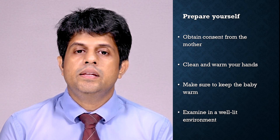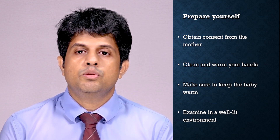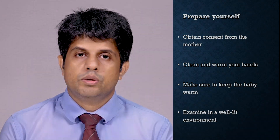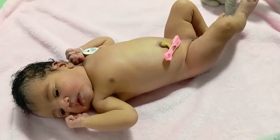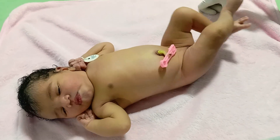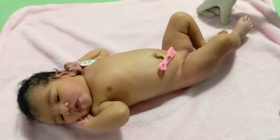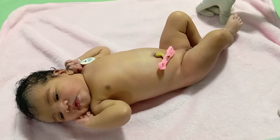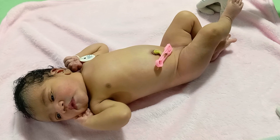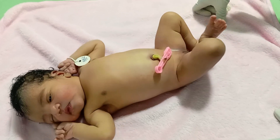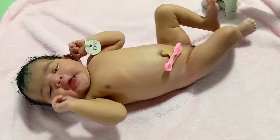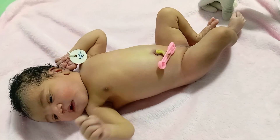Let's look at this video where a healthy term newborn is examined to rule out congenital abnormalities. A running commentary is also given for the purpose of demonstration. Begin your examination with inspection of the baby. Look for any evidence of respiratory distress, presence of icterus, or any subtle or obvious dysmorphic facial or body features. It is recommended that you follow a head-to-toe approach so that there is limited chance of missing any important physical signs or congenital abnormalities.